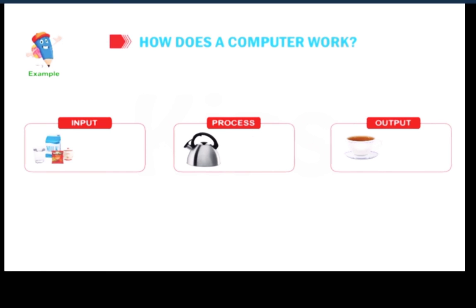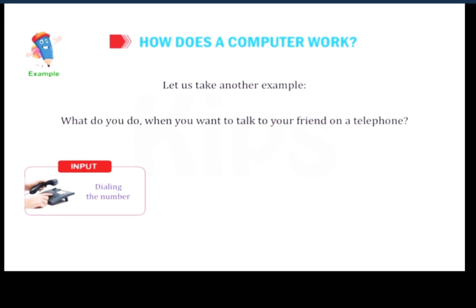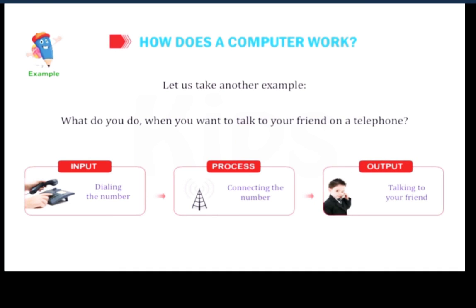Let us take another example. What do you do when you want to talk to your friend on a telephone? First, you have to be dialing the numbers is input and connect the number is processing and talking to your friend, it will be output.